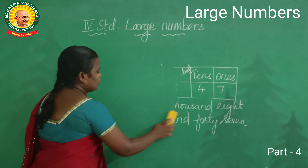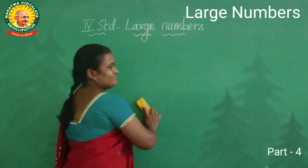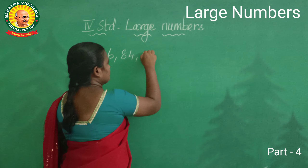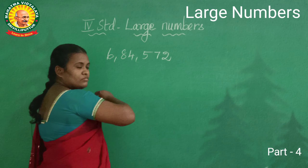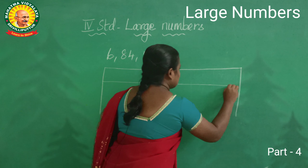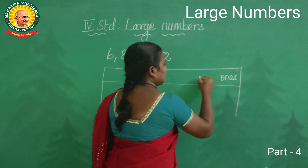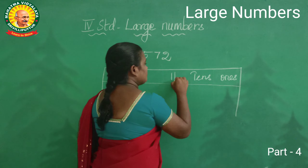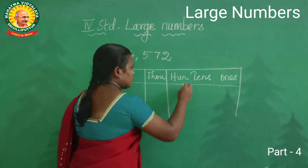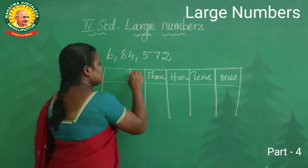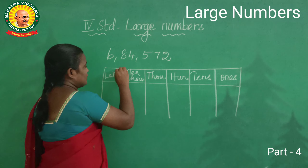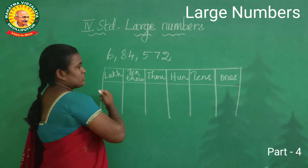Now we are going to put the place value chart for the lakh. First: ones — good. Next one is ones, tens, hundreds, thousands. Next one is tens thousands. And next we have to put lakh — very good. Next one is lakh.